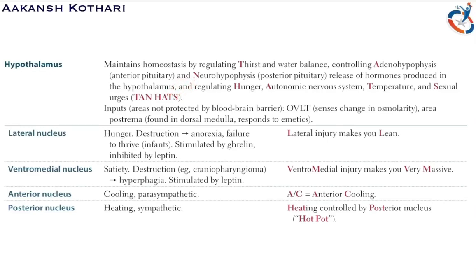The hypothalamus has various inputs, nuclei, and outputs. The inputs come from areas not protected by the blood-brain barrier, meaning signals reaching the hypothalamus come through locations where the blood-brain barrier is absent.